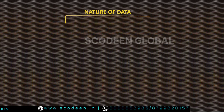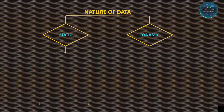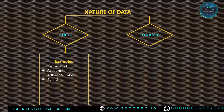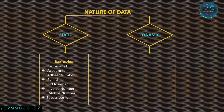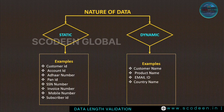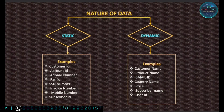In this tutorial we will learn how to validate the data length. Generally, the nature of data is categorized into two types: one is static and another one is dynamic. Static data means the length of the data remains constant — for example, customer ID, account ID, order number, ban ID, SSN number. Dynamic data means the length fluctuates — for example, customer name, product name, email ID, country name.